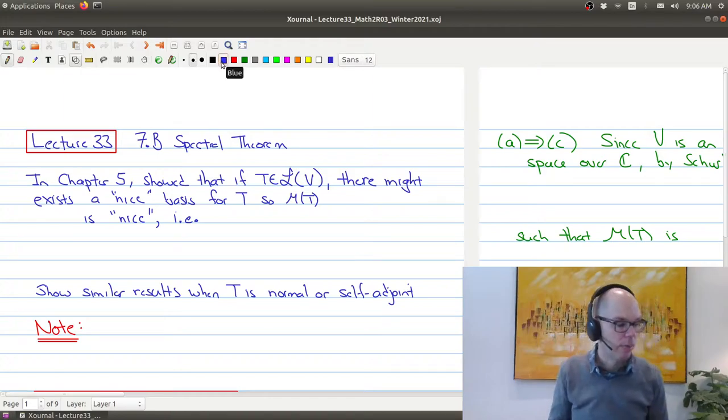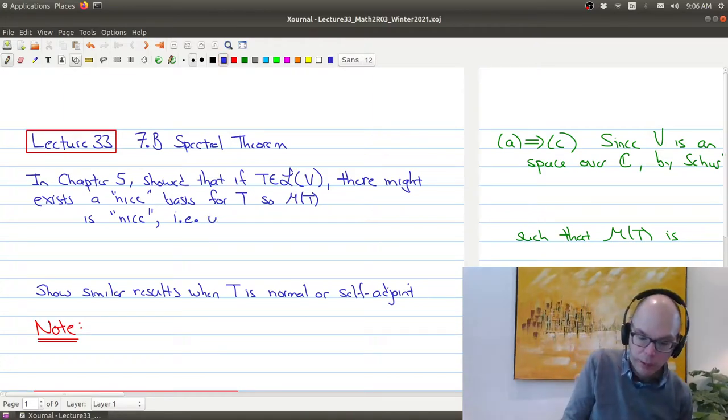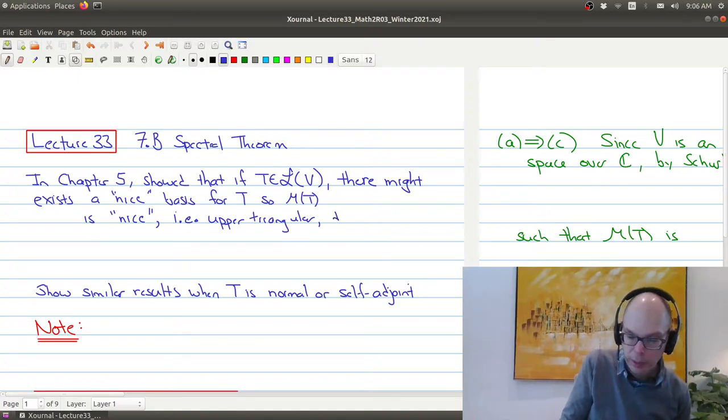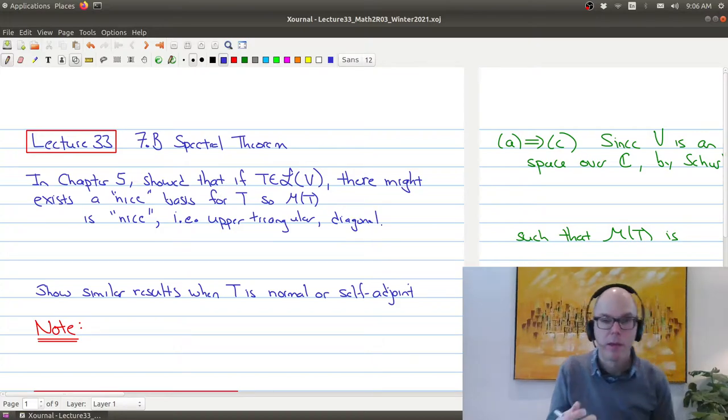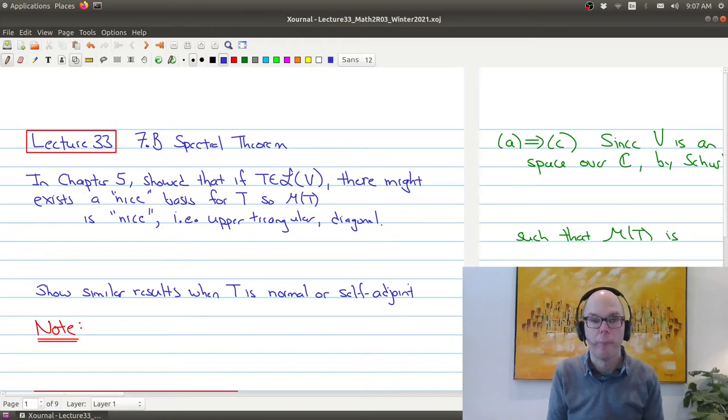So what do we mean by nice here? We mean it could either be maybe upper triangular, or maybe it could be diagonal. And as we saw later on, you could also pick a basis so that it has a Jordan form. So that shows that for any operator, you could pick a nice basis.